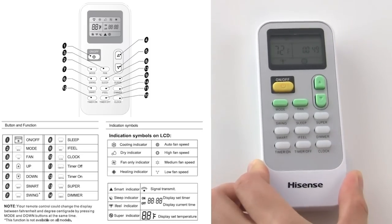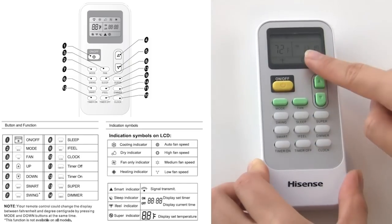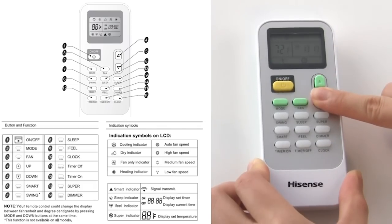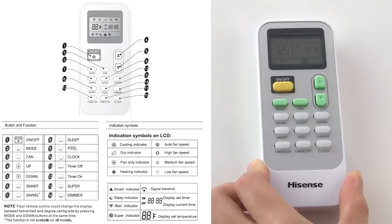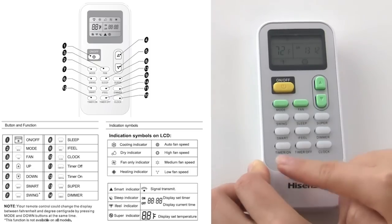The timer on button can be used to turn on the unit automatically at a preset time. Press time on button to turn on. When the desired time is displayed, press time on button again to confirm. You can cancel the timer on by pressing the timer on button again.